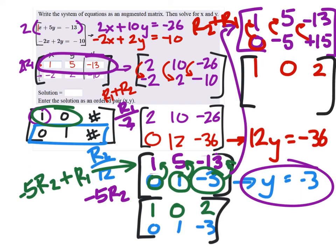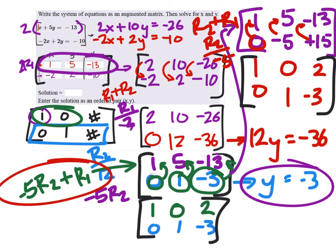Fifteen plus negative thirteen is two. And at this point, we could also take row two and divide it by negative five again, giving us zero, one, negative three. Now, hopefully you guys see the value of this from that one, right? Like, you could do two steps in one.